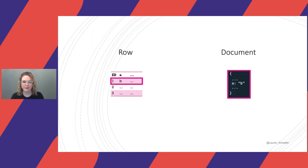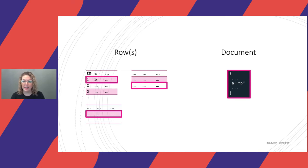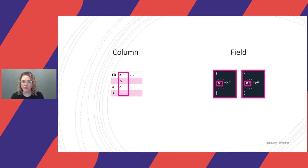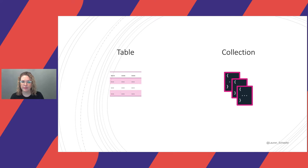Now that we're starting to get the idea of how tables and documents are similar and different, let's do some explicit term mapping. On the left side of the screen you'll see tabular or relational database terms, and on the right side you'll see document database terms. A row maps to a document — or, depending on how you've normalized your data, rows from multiple tables could map to a single document. A column maps roughly to a field. In a relational database, groups of rows are stored in tables. In a document database, groups of documents are stored in collections. So tables map to collections.